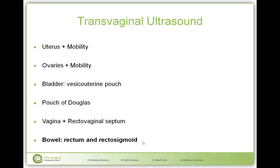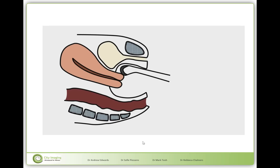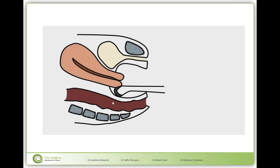Bowel lesions are probably the easiest to identify, so we start there. To look at the bowel we need to look in an area where we usually don't look. We put the vaginal ultrasound probe in the posterior fornix — we are used to putting the probe in the anterior fornix and looking at the uterus and both ovaries. However, the majority of deep infiltrating endometriosis will happen in the area where the pouch of Douglas is, the sacro-uterine ligaments, and the bowel.